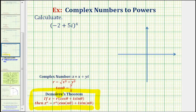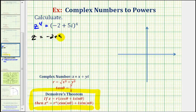Notice how for the first step, we have to write the complex number negative two plus five i in polar form with the form given here. So we'll let this equal z to the fourth, and the first step is to write z, which is equal to negative two plus five i, in polar form.